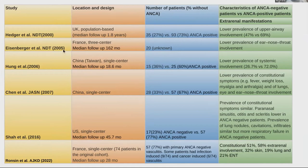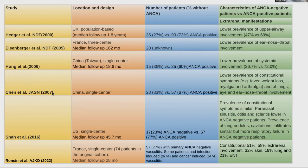The 2005 French study described 20 ANCA-negative patients who had lower prevalence of ENT involvement. The 2006 Taiwanese study compared 36% ANCA negative versus 60% ANCA positive, with lower prevalence of systemic involvement — 26% versus 72%. The 2007 Chinese single-center study had 33% ANCA negative versus 67% ANCA positive with no prevalence of constitutional symptoms or lung involvement.